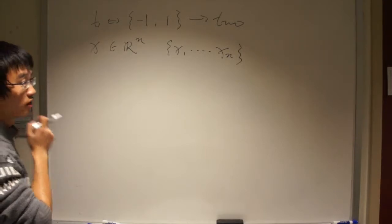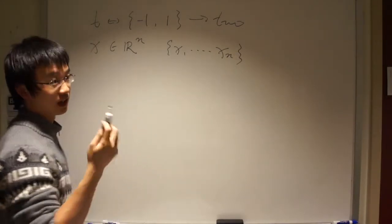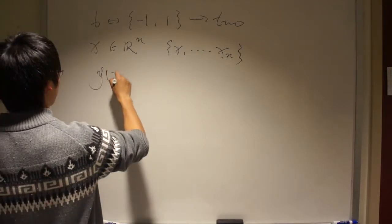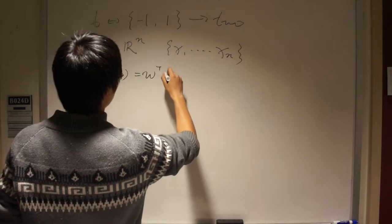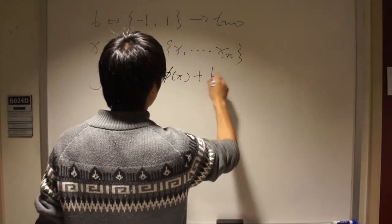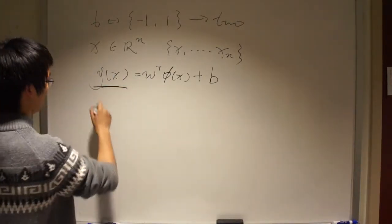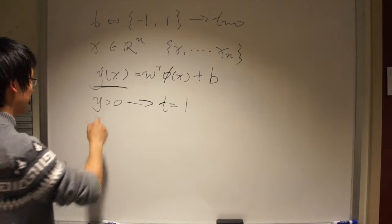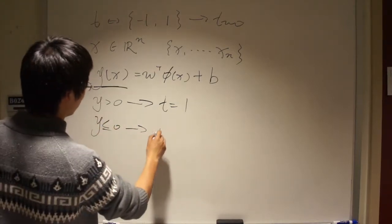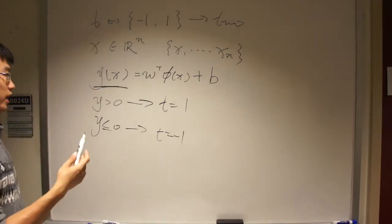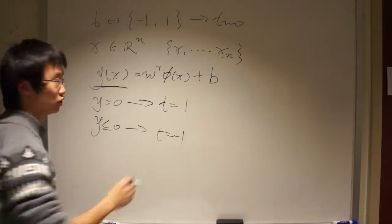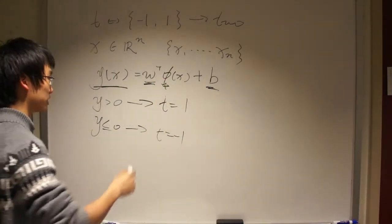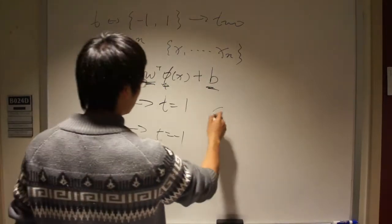We want to find a boundary — a discriminant function Y(X). If Y is greater than zero, then the classification result is T equals one. If Y is less than or equal to zero, then T equals minus one. What we want to do is choose the proper W and B, and maybe some function, which can make the classification error be small.